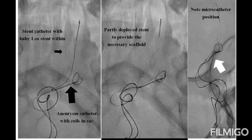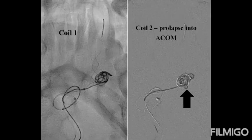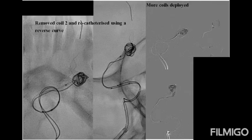Note the microcatheter position is not as satisfactory as we wanted it to be. The first coil placement was satisfactory. However, while deploying the second coil, we noted coil loops prolapsing into the ECOM region, and this was due to the unsatisfactory microcatheter position. The second coil was removed. A Headway microcatheter was used as it better retains the shape. A reverse curve was given. Note the proximal and distal curves very close to each other, giving a better microcatheter tip position within the sac. Further coils were deployed as noted in the blank roadmap, and better coil occlusion of the aneurysm sac was obtained.